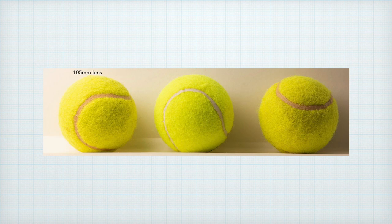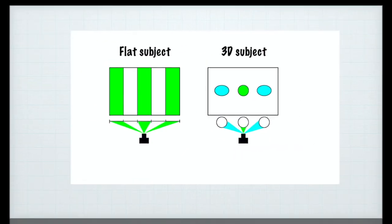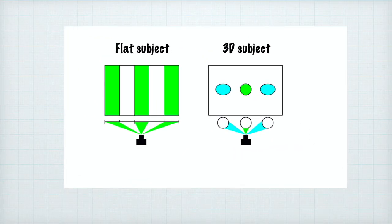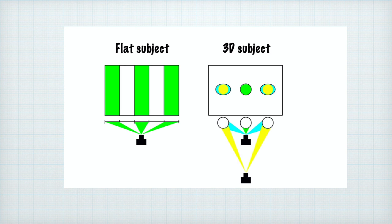Here are the tennis balls photographed with a 105mm lens. The same thing happens on a larger scale with a row of columns. With a flat image photographed wide-angle and close, all columns are projected to the same width on the sensor. But with three-dimensional balls at the same camera, lens, and distance, the balls on the ends are projected wider than actual. When the camera is backed up, the balls are projected in closer proportion to their actual size — though they are smaller in the frame, so you'd either need to crop in or use a longer lens to fill the frame.